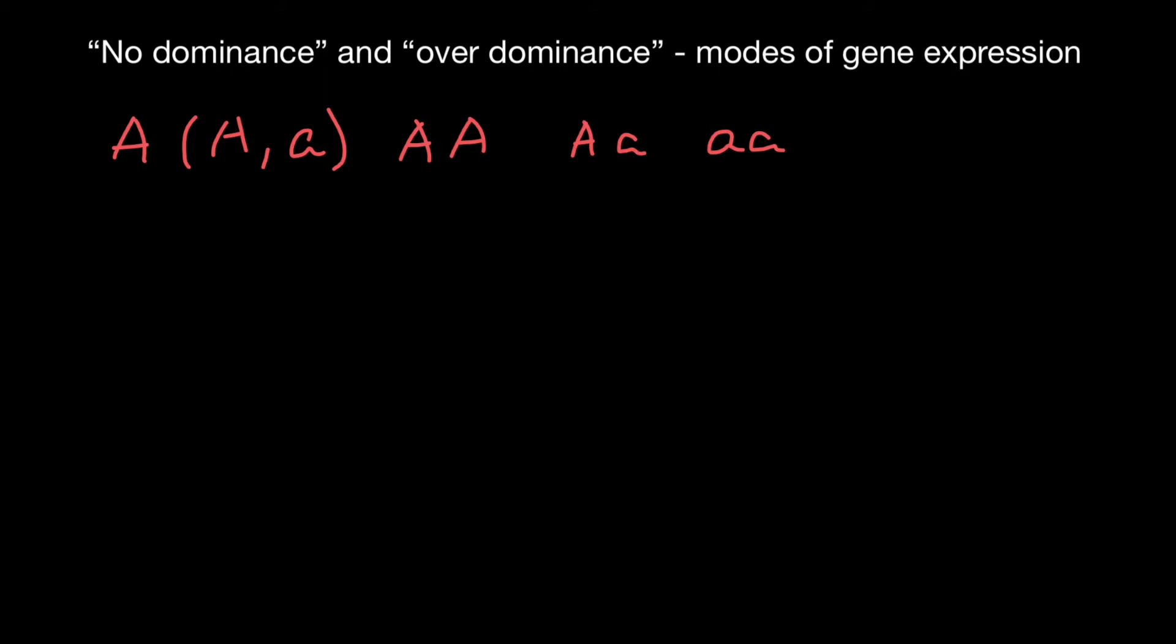In simple Mendelian genetics, these two genotypes would make one phenotype and this recessive genotype would make another phenotype. So three genotypes and two phenotypes. This is simple dominance. And what is no dominance?